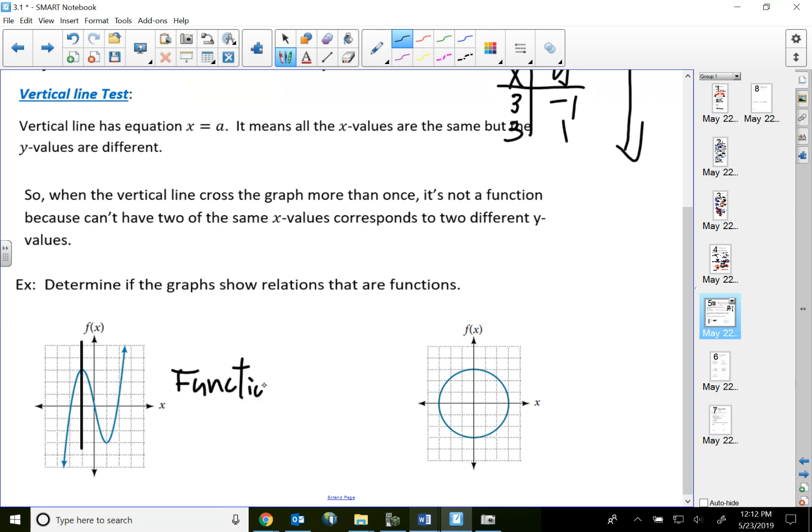If you touch it more than one time, just like right here, if I draw a vertical line right here, that means at this point and this point, the two x values are exactly the same. Actually, it's one.